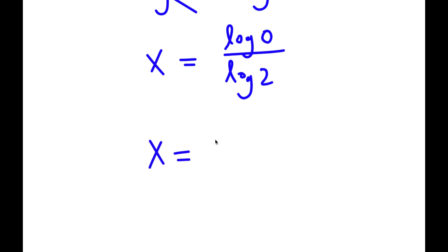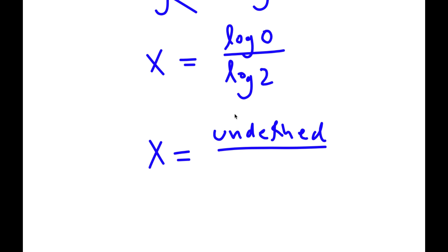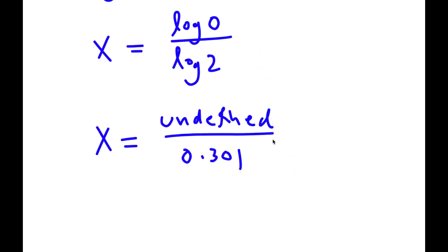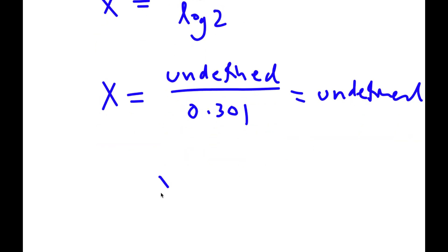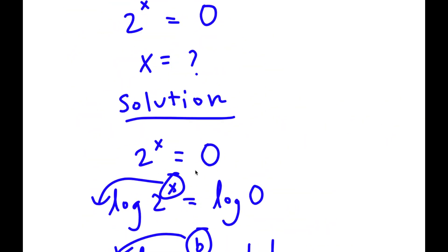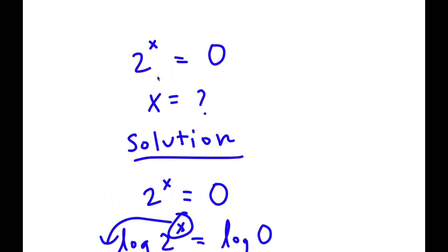Now, log 0 is actually undefined, and log 2 is 0.301. If something is undefined and it is divided by a number, the result will also be undefined, because you can't divide an undefined value by another number — meaning the value of x is undefined. Also, you can't take a power of a number and make it equal to 0, because no matter what power you take, a number cannot equal 0. So undefined is my answer.